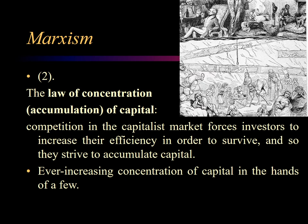The second is the Law of Concentration of Capital, also known as the Law of Accumulation of Capital. Competition in the capitalist market compels investors to increase their efficiency in order to survive, and so they strive to accumulate capital. This leads to an ever-increasing concentration of capital in the hands of a few as the weaker capitalists are selected out of the system. The impoverished capitalists then join the ranks of the proletariat, and this makes revolution more likely.